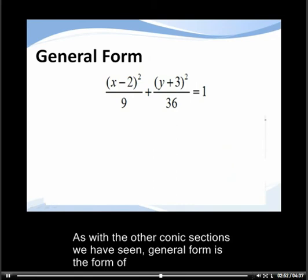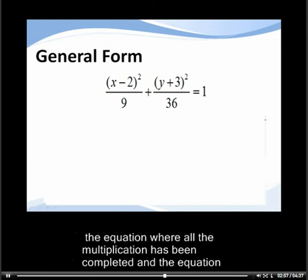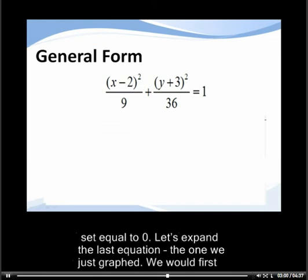As with the other conic sections we have seen, general form is the form of the equation where all the multiplication has been completed and the equation set equal to 0.